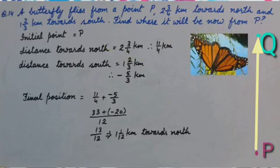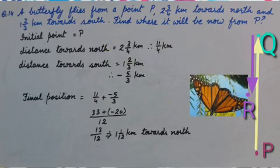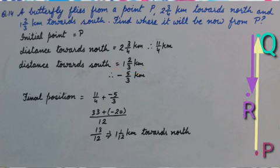From there it started towards south and covered a distance of 1 and 2 by 3 km. It means because it is returning, so it is negative. Minus 5 upon 3.